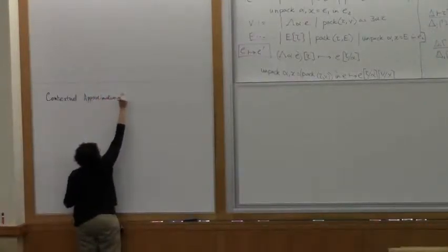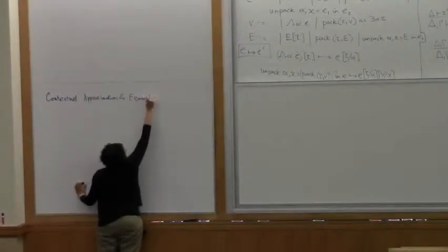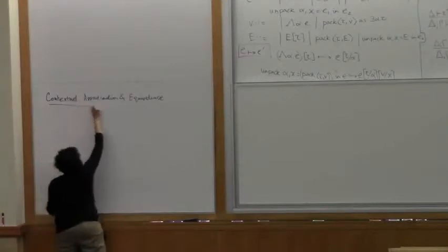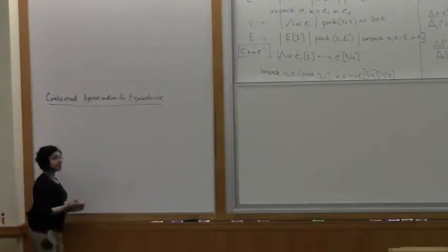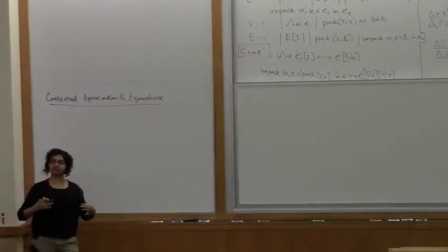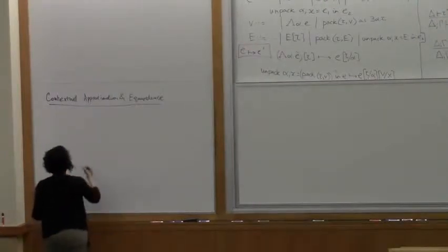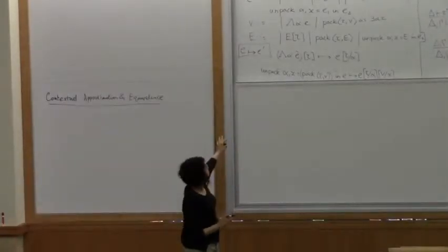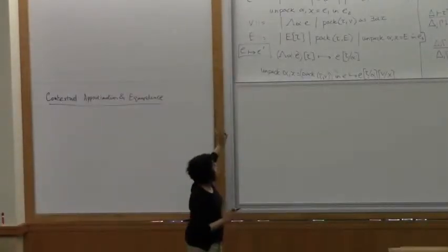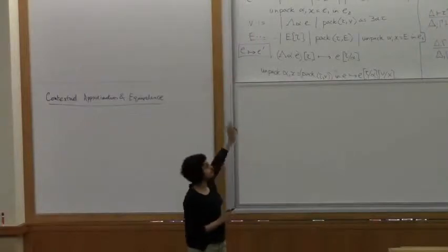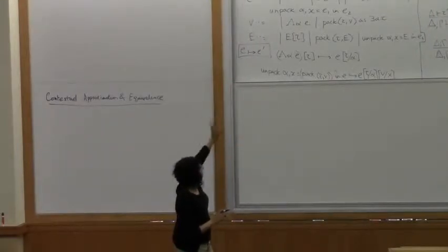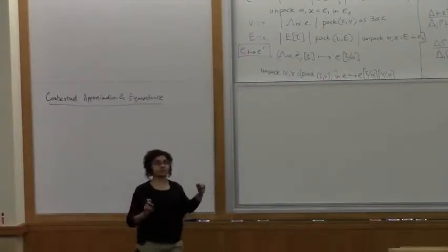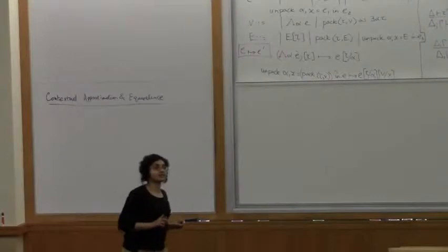Instead of defining contextual equivalence directly like I did yesterday, at the very end of yesterday's lecture I added universal types and existential types to our language. So assume that the language we have now includes Booleans, functions, recursive types, polymorphism, and existential types — I've just left out most of the syntax for the earlier stuff.